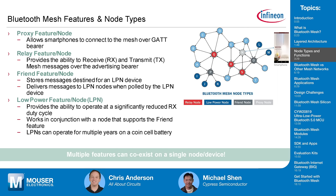Bluetooth mesh defines four different node types: proxy nodes, relay nodes, friend nodes, and low power nodes. The proxy node converts packets between the mesh network and the BLE GATT network. The relay node receives packets and forwards them to the rest of the connected nodes — almost all mesh nodes can be configured as relay nodes.